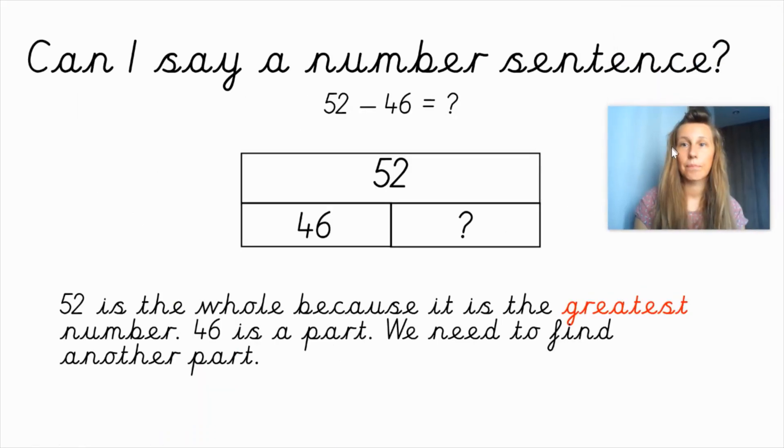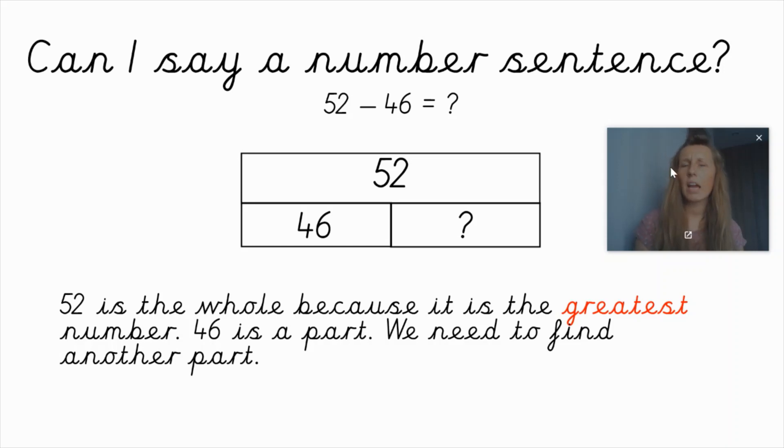Right. Can I say a number sentence? So, now we know that fifty-two comes first. So, I'm writing my number sentence. Fifty-two minus forty-six. We know that fifty-two is the greatest number. So, it is the whole because it is the greatest number.